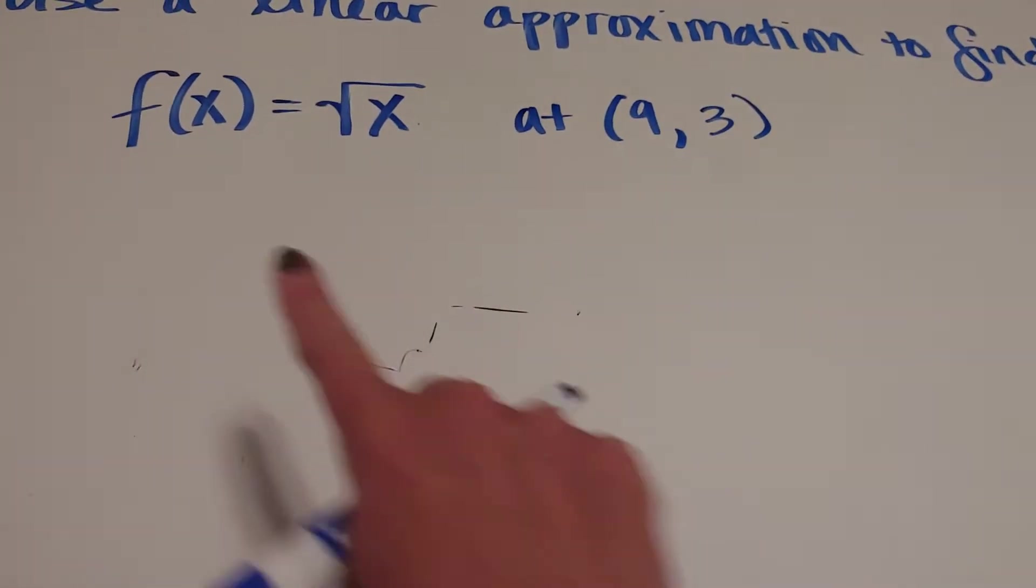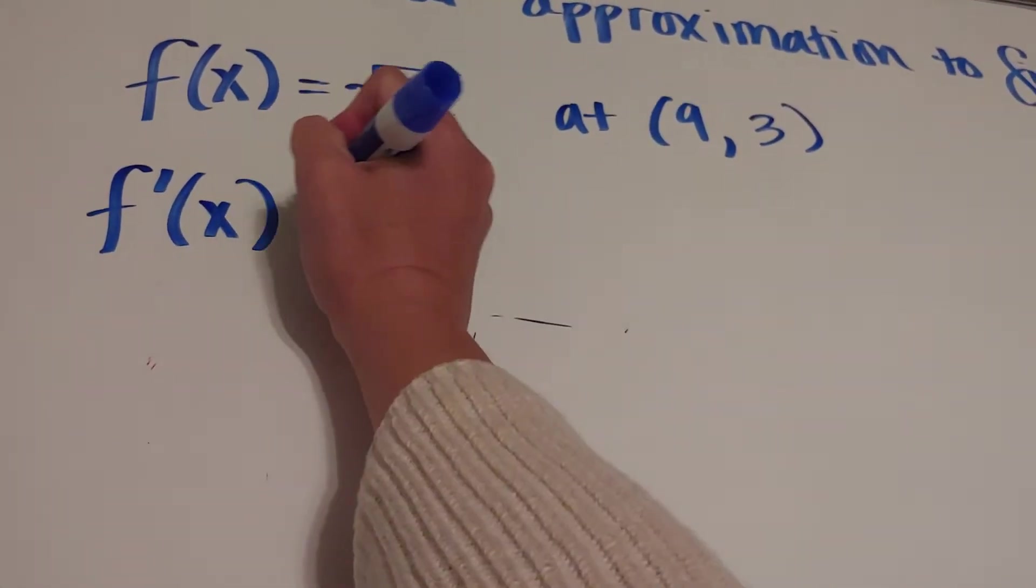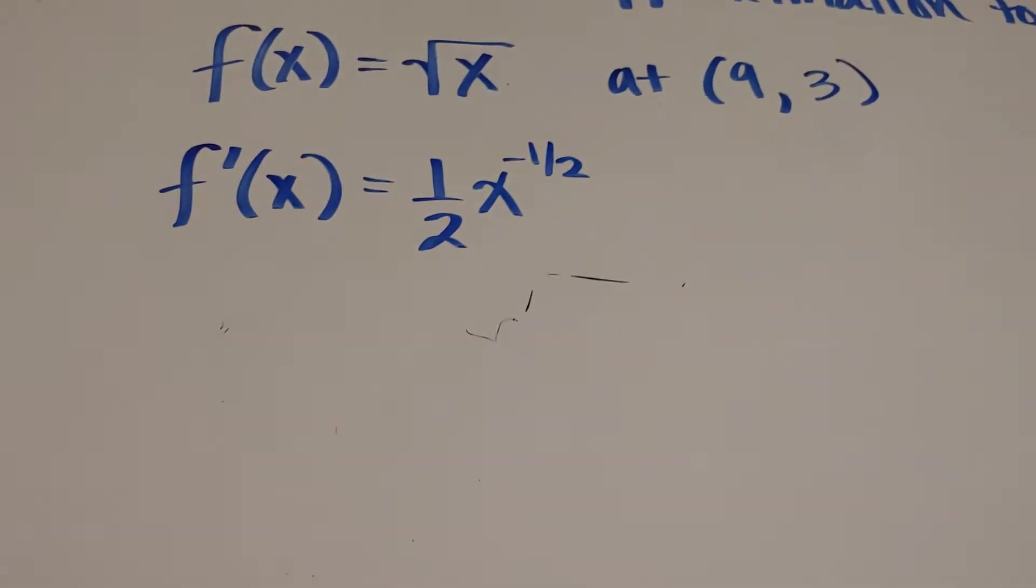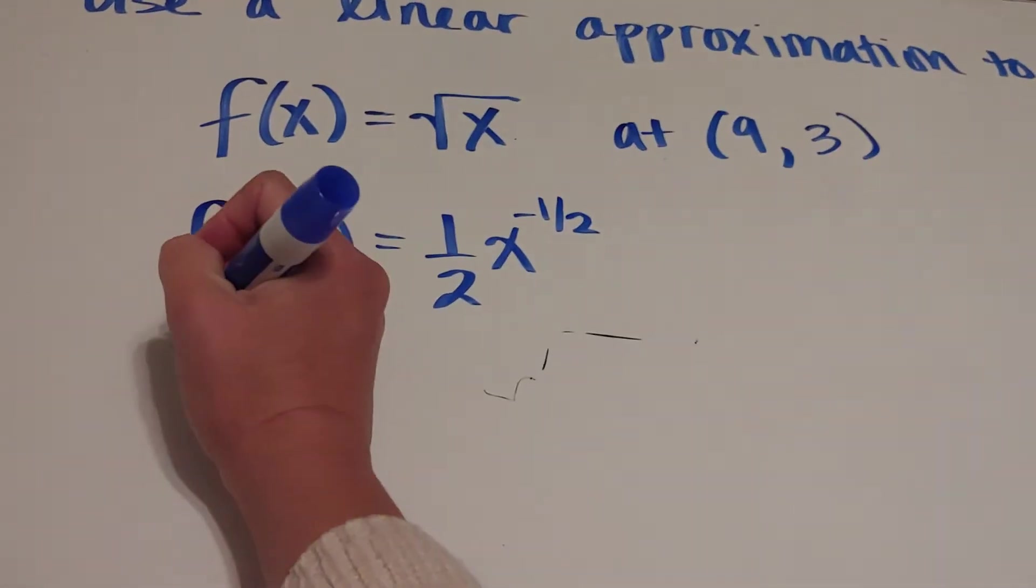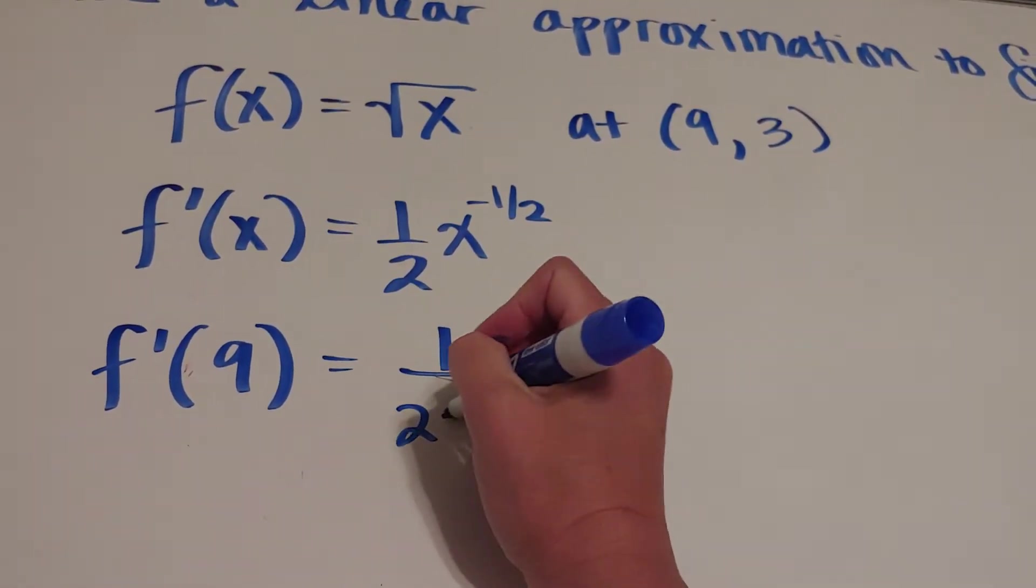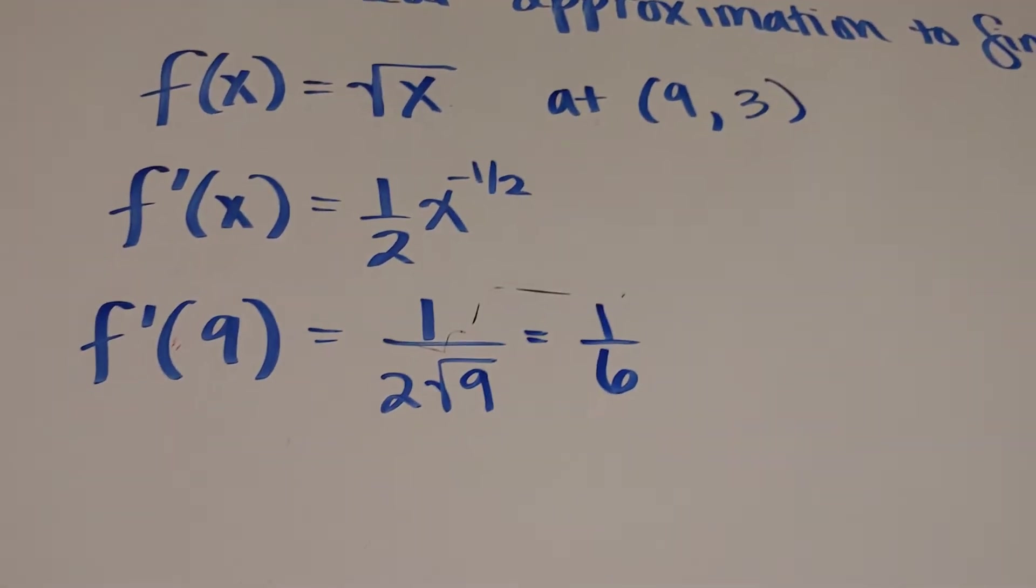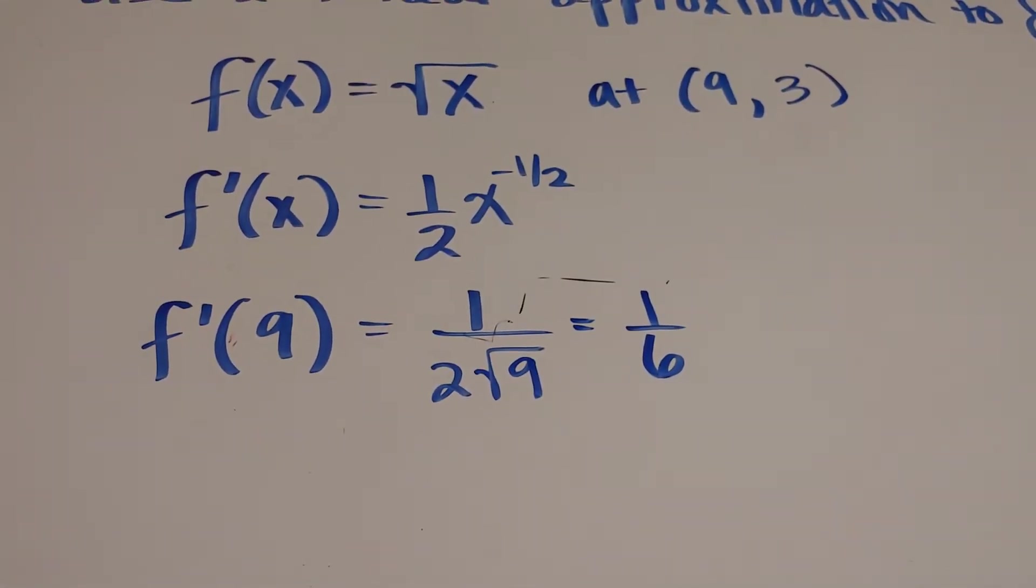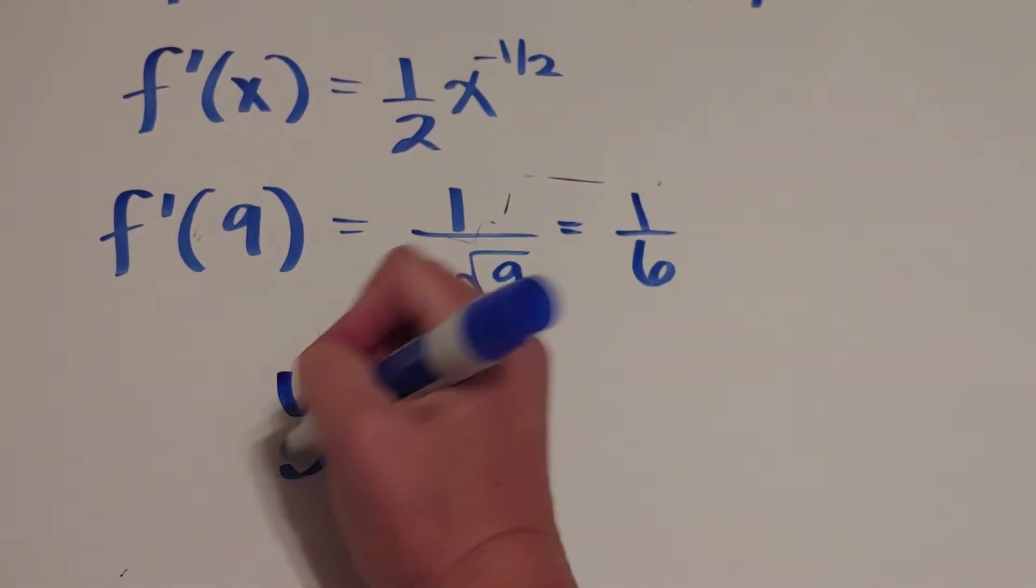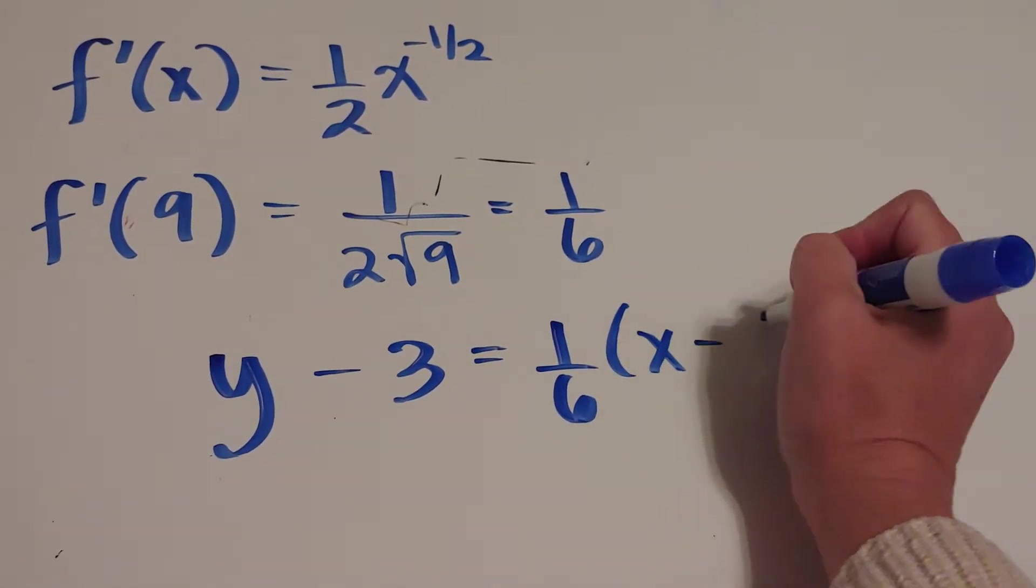So let's go ahead and find this tangent line. To find a tangent line, I do the derivative. And then I plug in my x and I'm going to get a slope of one sixth. Now my tangent line, I'm going to have y minus three equals one sixth x minus nine.